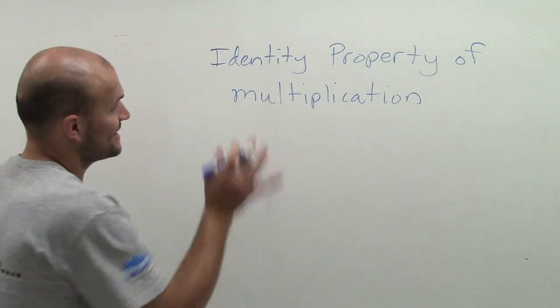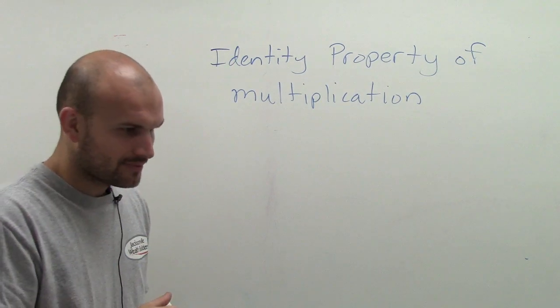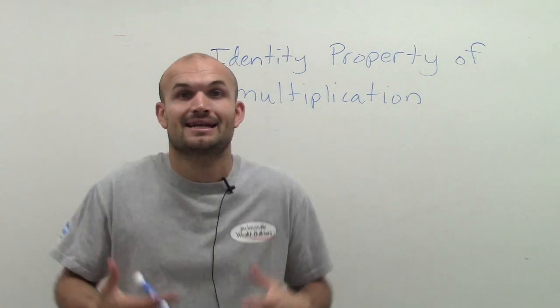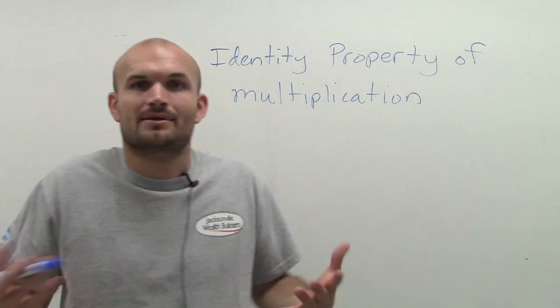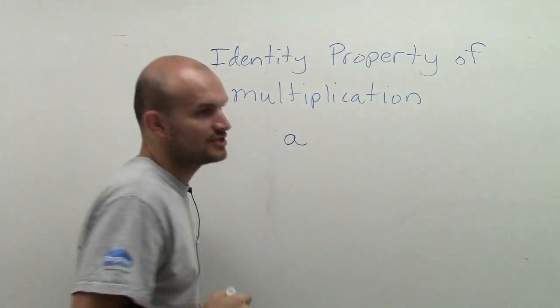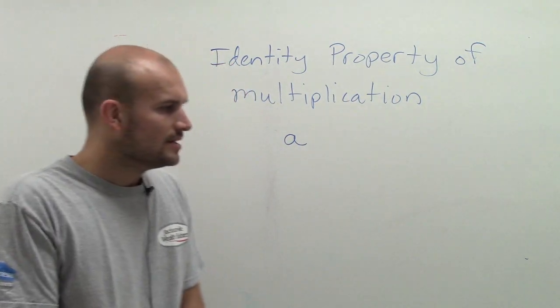The identity property of multiplication—well, let's not get ahead of ourselves. Remember we talked about identity. Identity is the characteristics that give something its unique identity, that makes it something. So let's just pick a to represent any number.